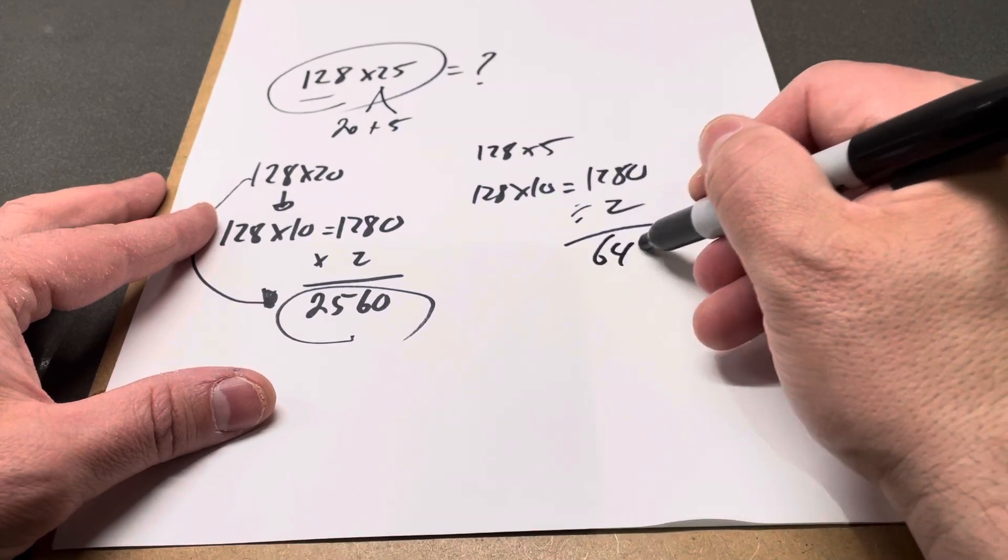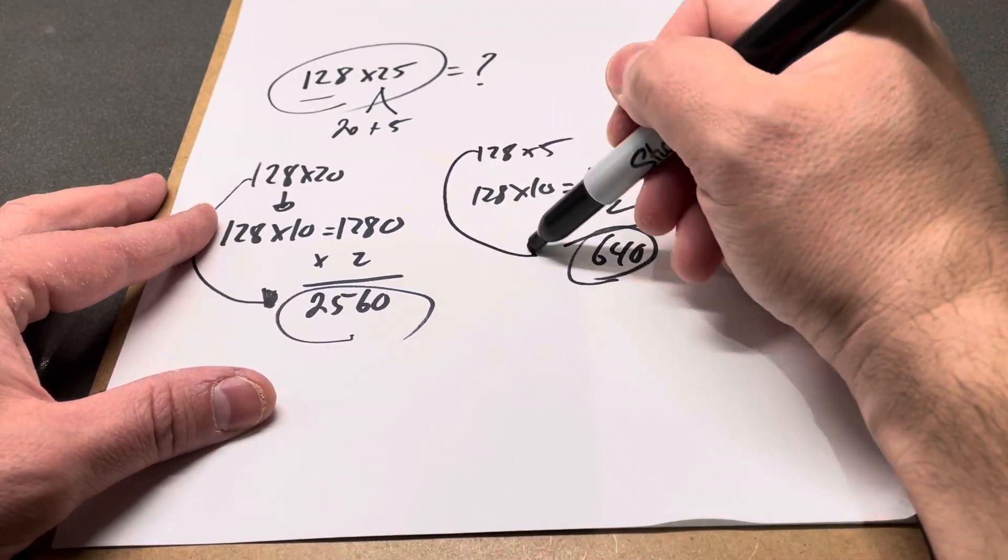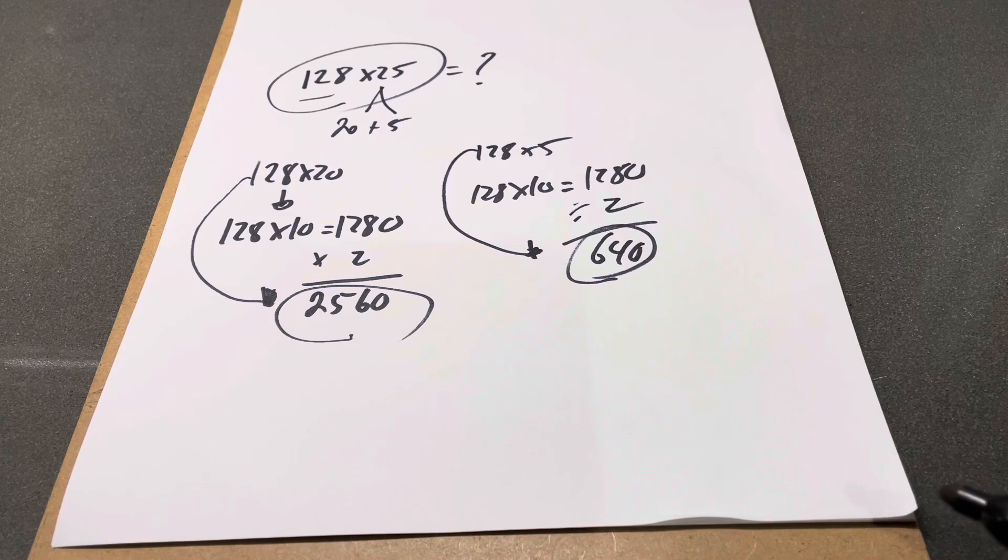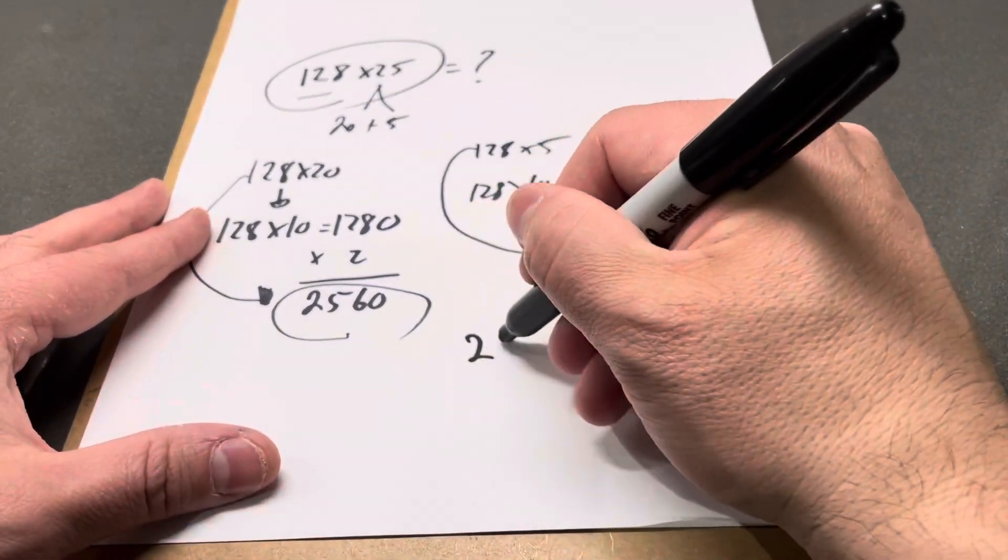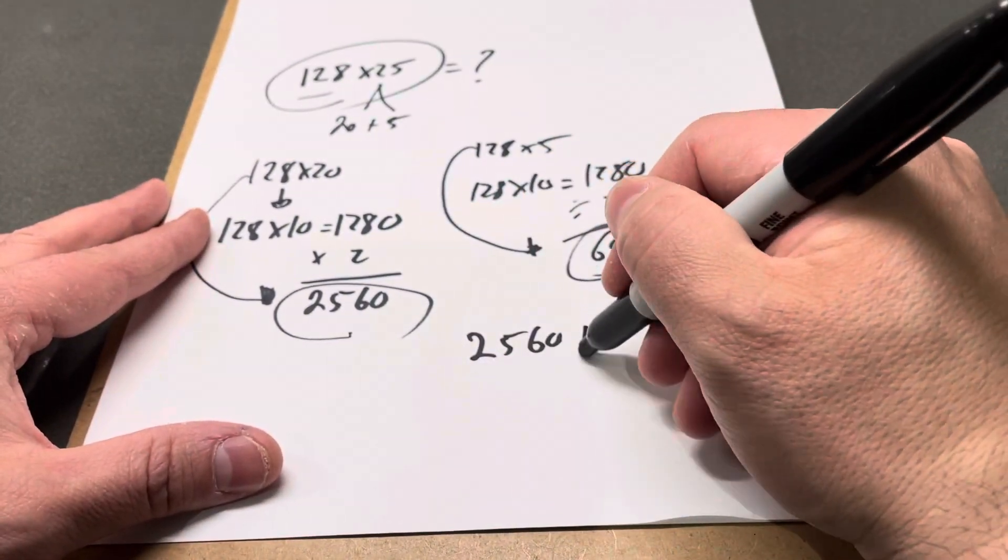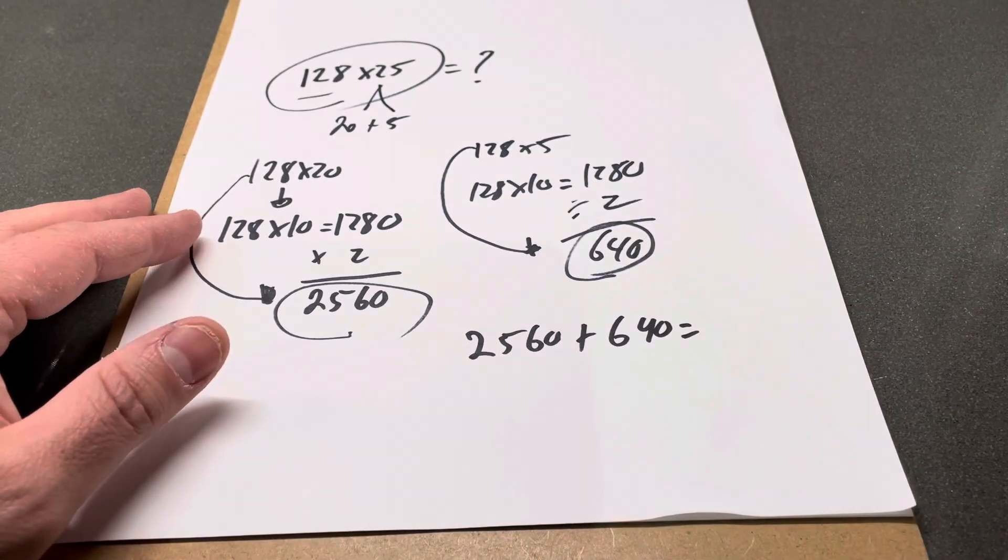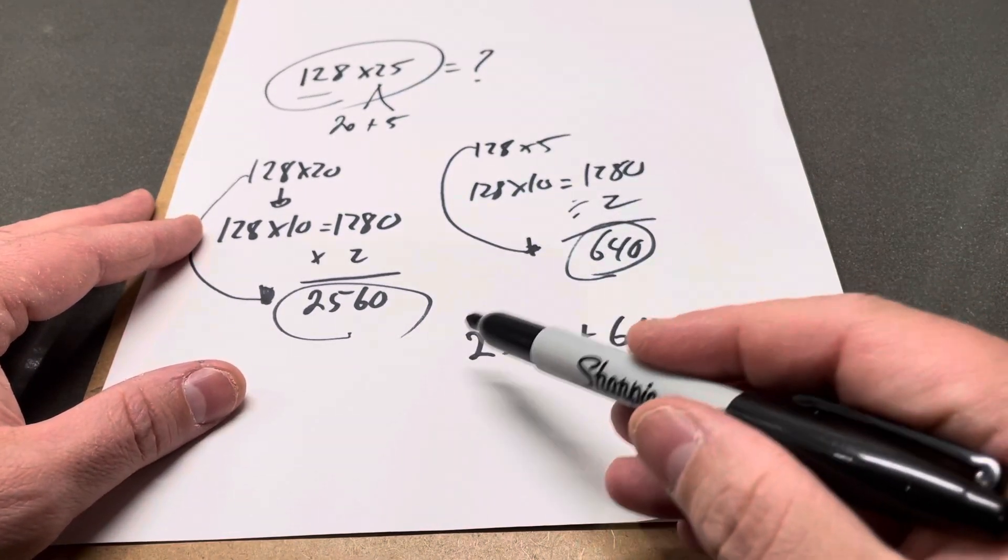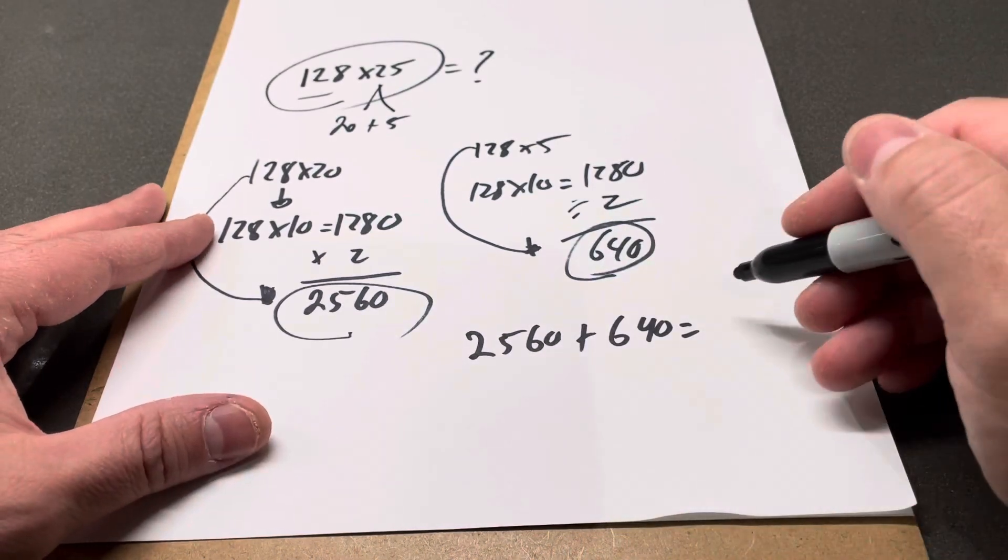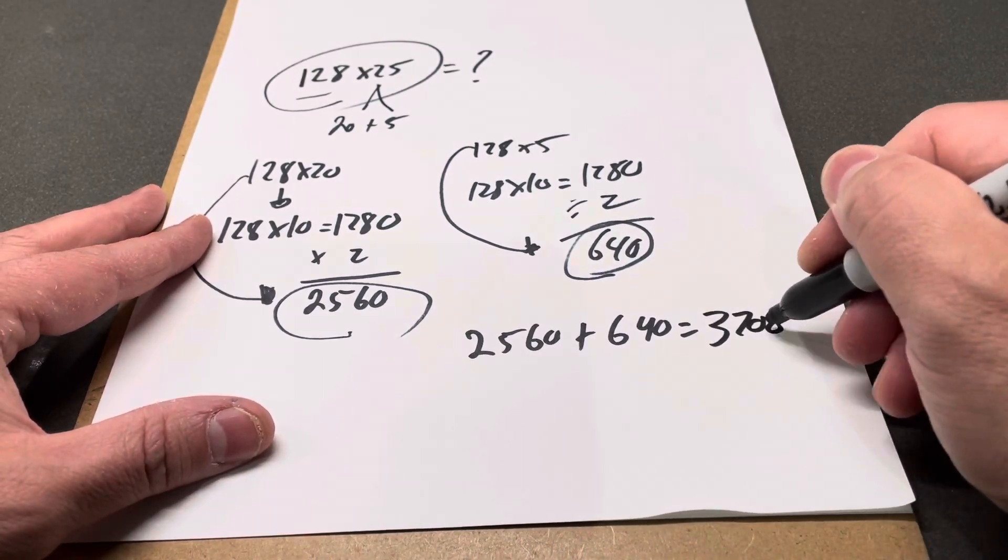So that's my answer - 128 times 5 is 640. I just take these two numbers and add them together. 2560 plus 640 equals 3200. That's our answer.